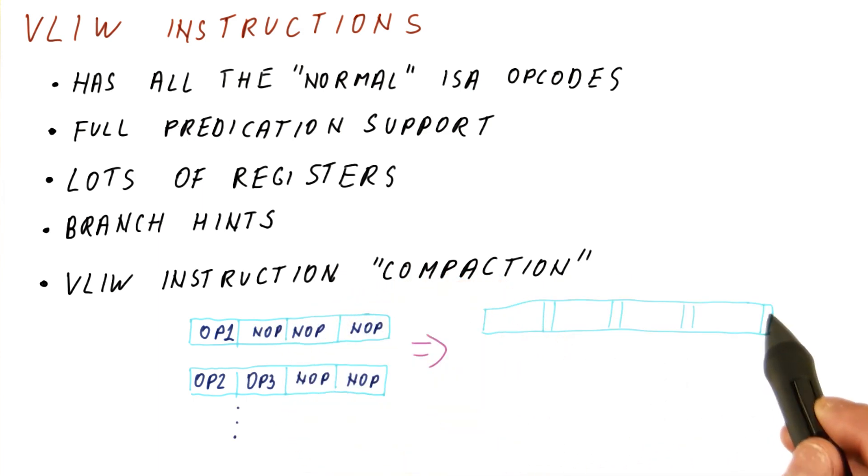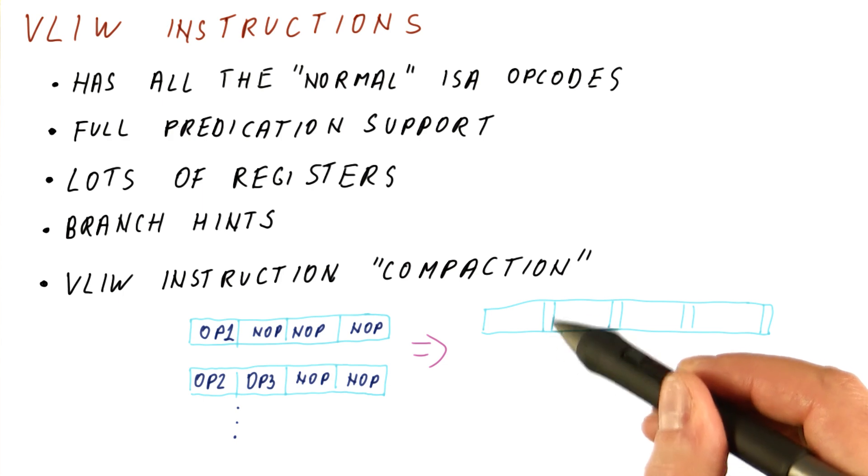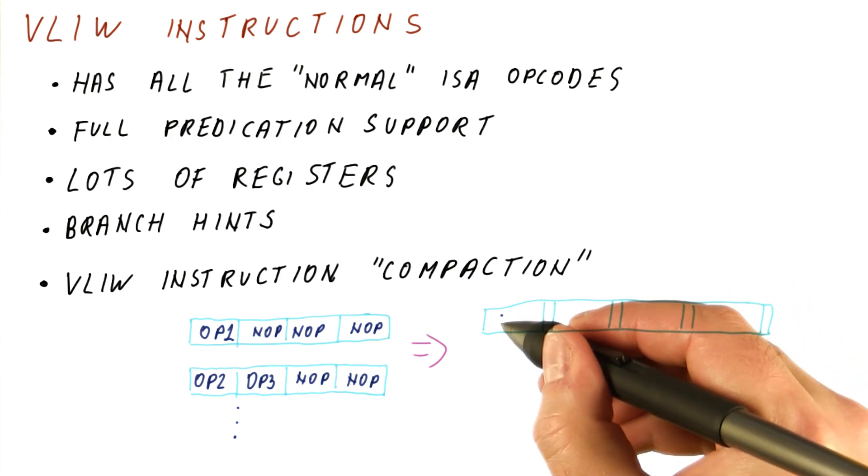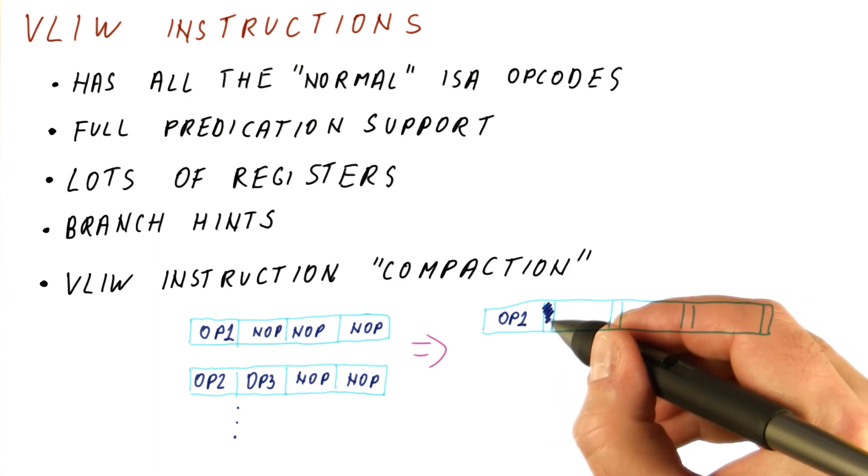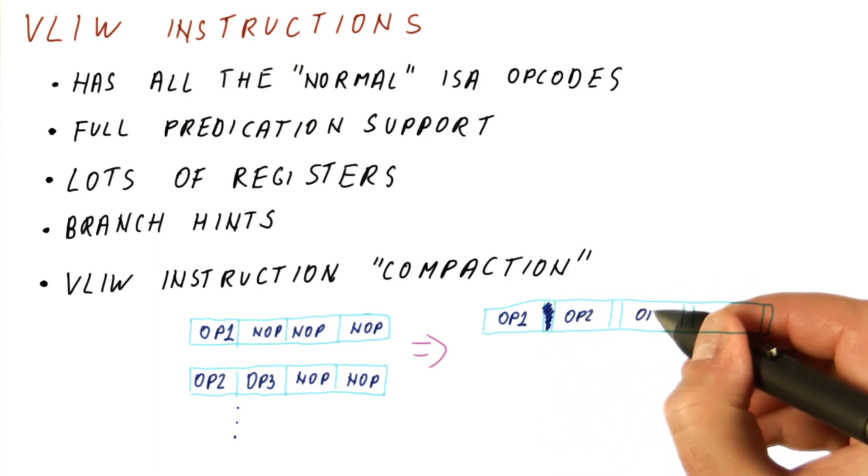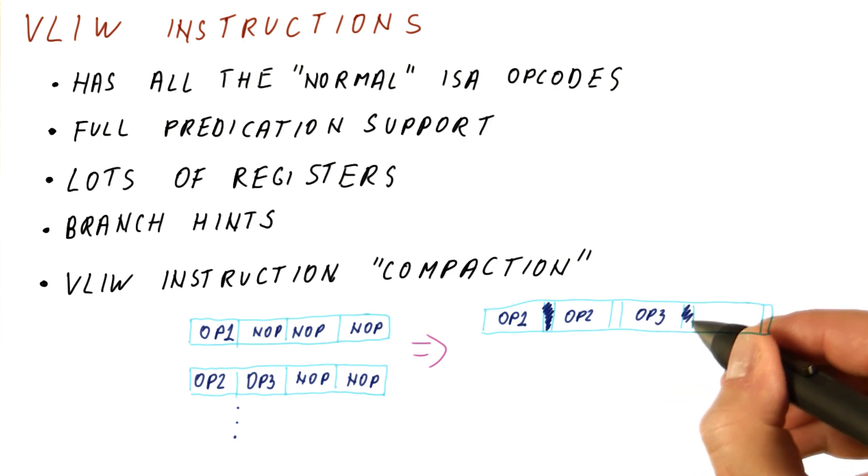The actual VLIW instruction might include some sort of a stop bit for every instruction, in which case we can put OP1 here, then mark this as a stop, and then we can put OP2 and OP3 like this, mark this as a stop, and even squeeze in maybe something else here.